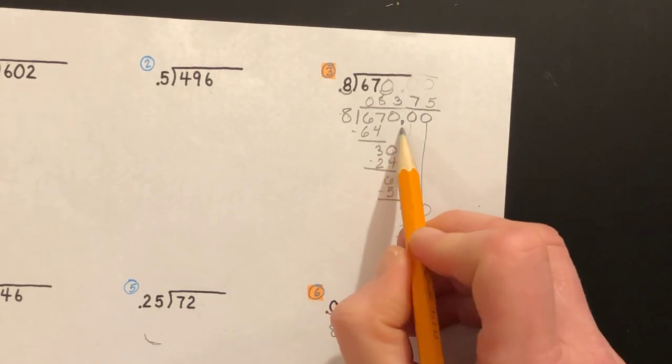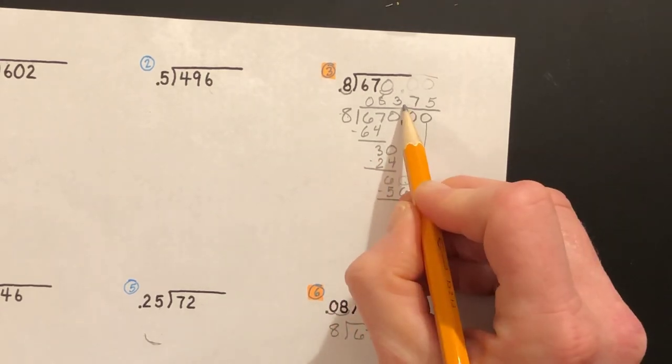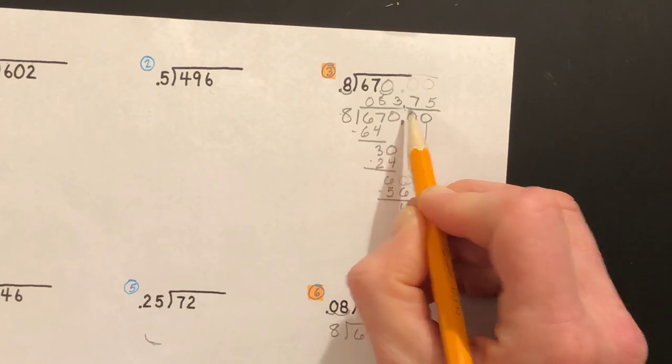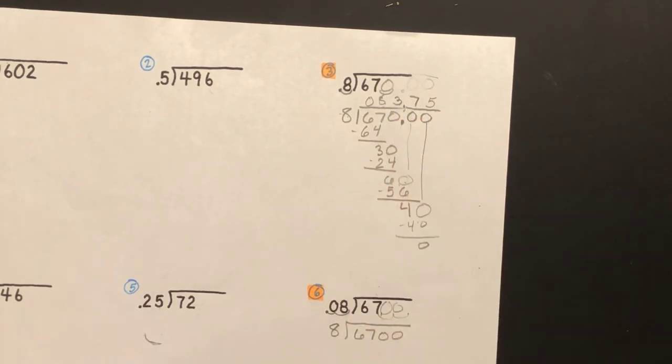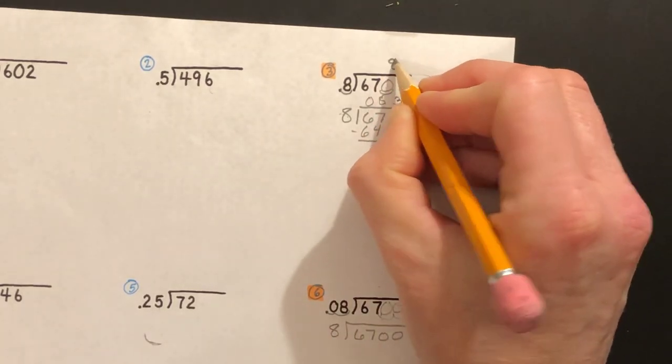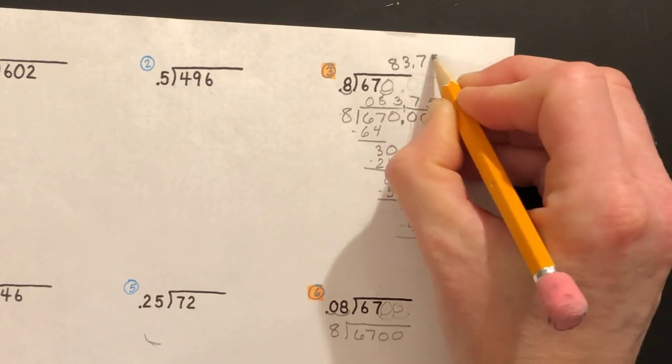Alright, now let me take my decimal and bring it up: 83.75. 83 and 75 hundredths. Our final answer is 83 and 75 hundredths.